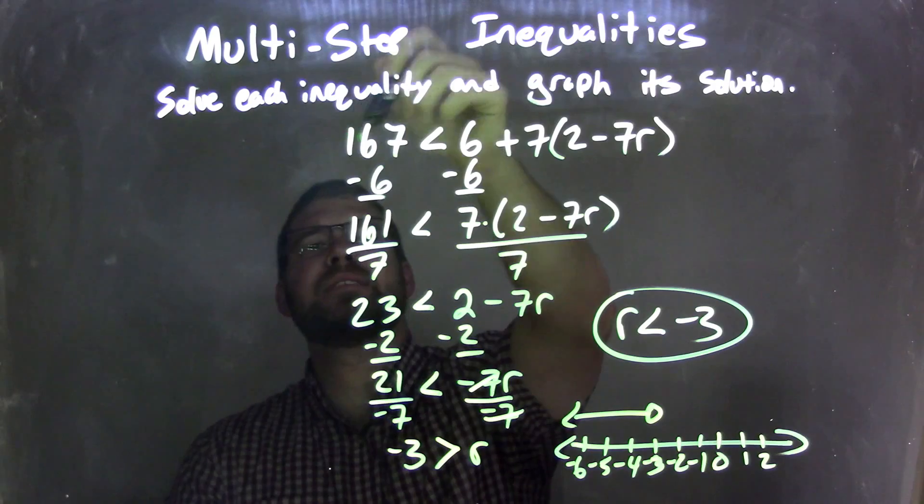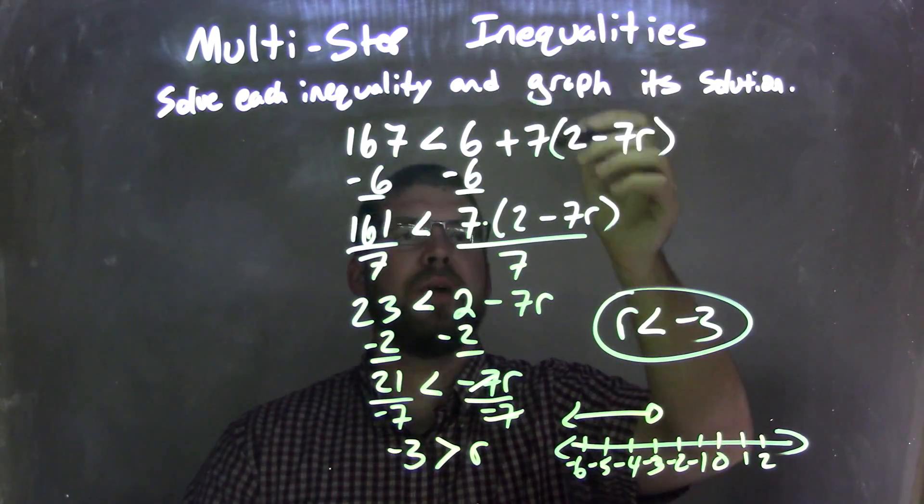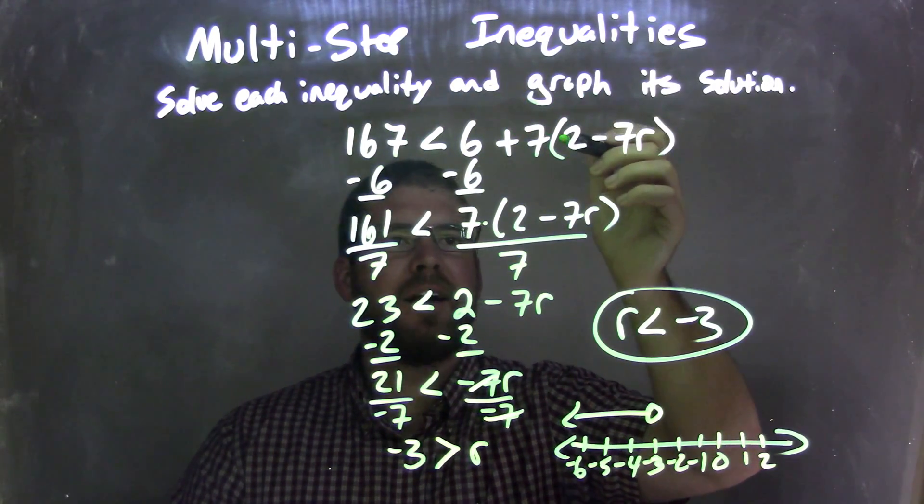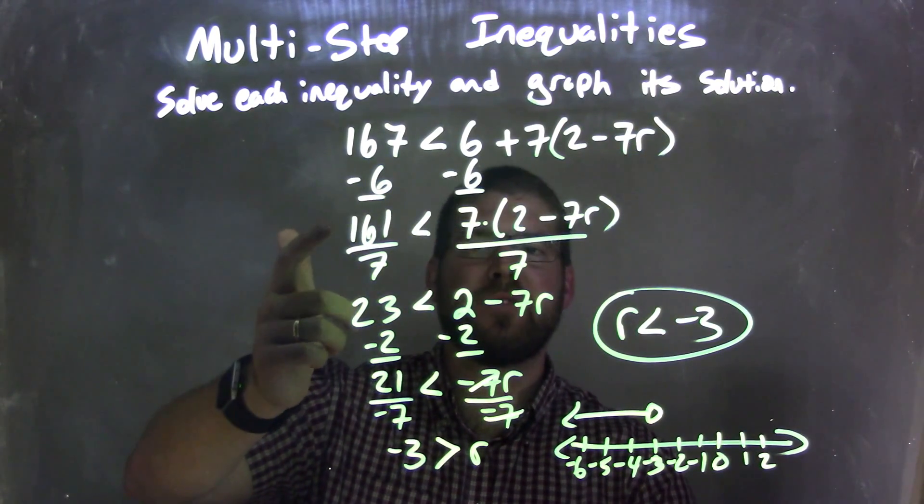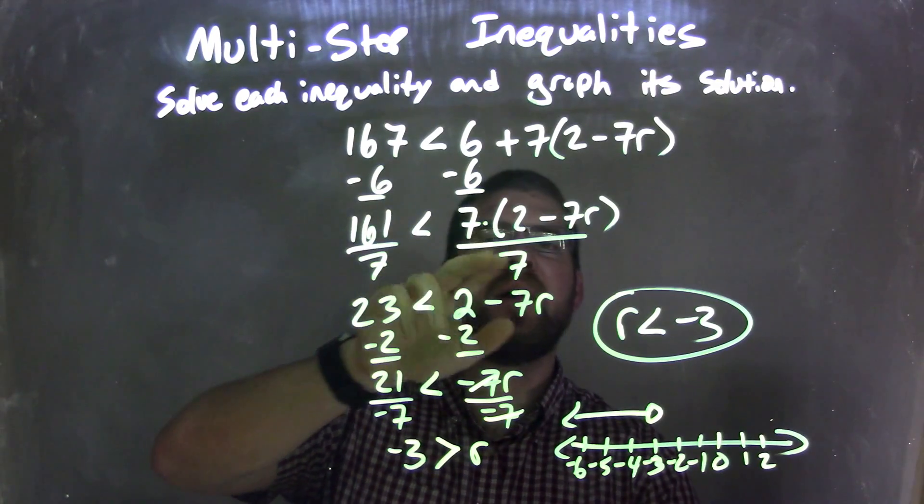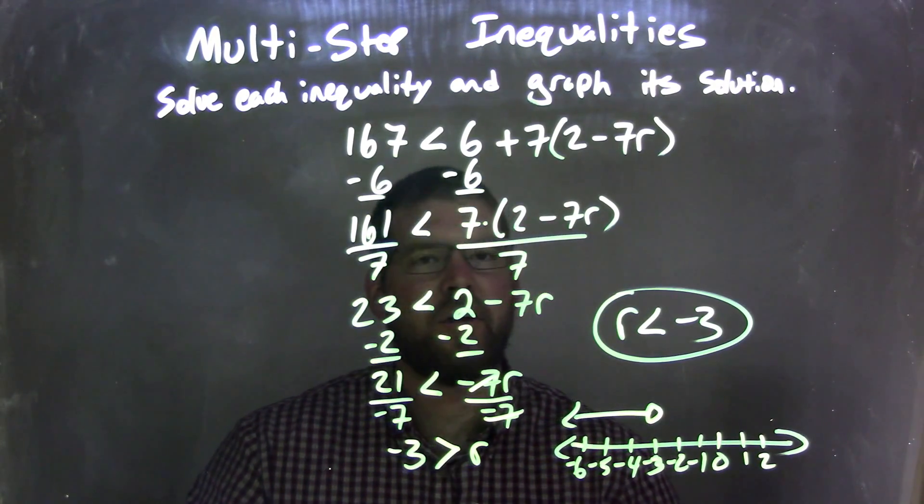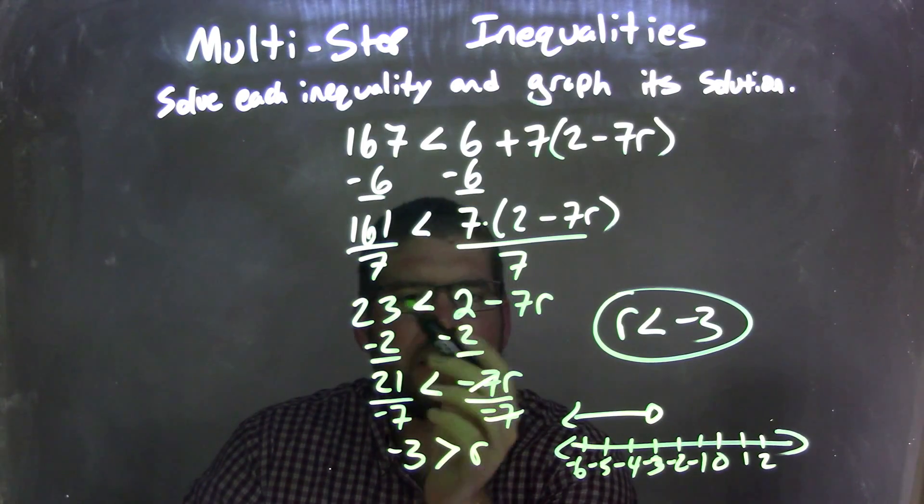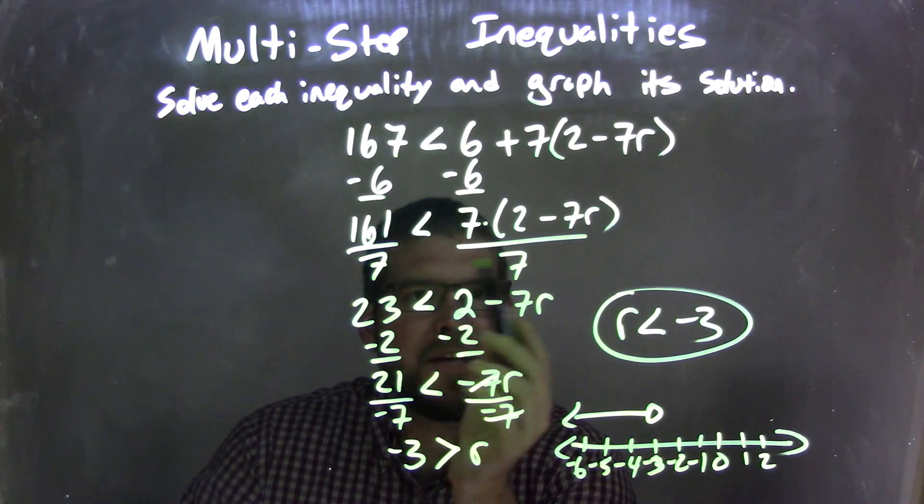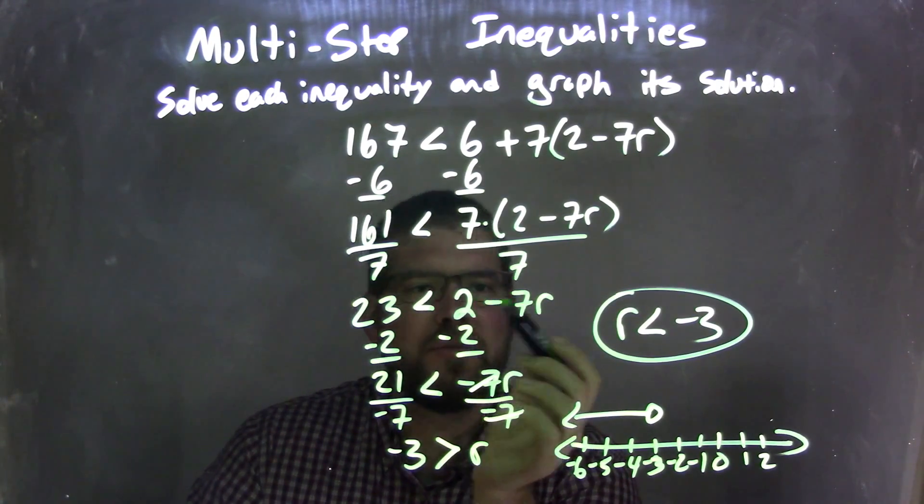Let's recap. We have 167 is less than 6 plus 7 times 2 minus 7r. I subtract 6 from both sides, giving me 161 on the left and 7 times 2 minus 7r on the right. I divided by 7 on both sides and got 23 using my calculator on the left, and then what's inside the parentheses on the right, 2 minus 7r.